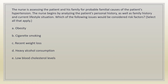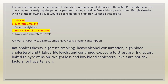The nurse is assessing the patient and his family for probable familial causes of the patient's hypertension by analyzing personal history, family history, and current lifestyle. Which of the following issues would be considered risk factors? Select all that apply. A. Obesity. B. Cigarette smoking. C. Recent weight loss. D. Heavy alcohol consumption. E. Low blood cholesterol levels. Answer: A, B, and D. Rationale: obesity, cigarette smoking, heavy alcohol consumption, high blood cholesterol and triglyceride levels, and continued exposure to stress are risk factors linked to hypertension. Weight loss and low blood cholesterol levels are not risk factors.